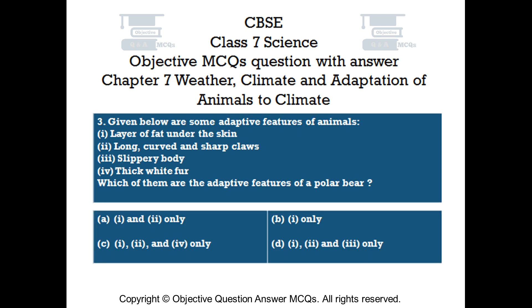Question number 3. Given below are some adaptive features of animals: 1. Layer of fat under the skin. 2. Long, curved and sharp claws. 3. Slippery body. 4. Thick white fur. Which of them are the adaptive features of a polar bear?